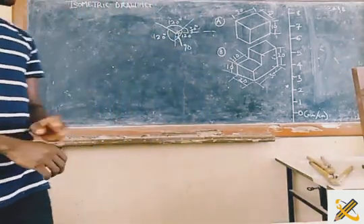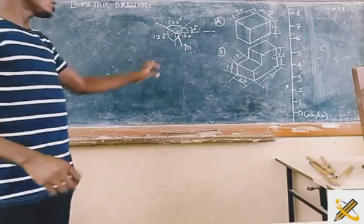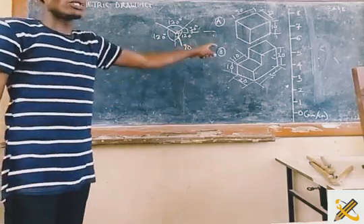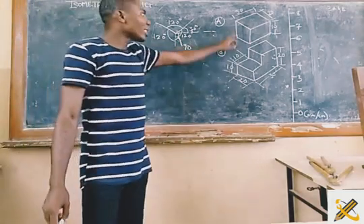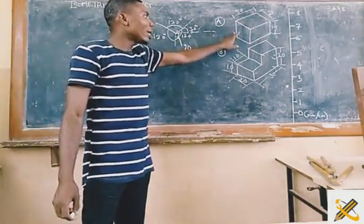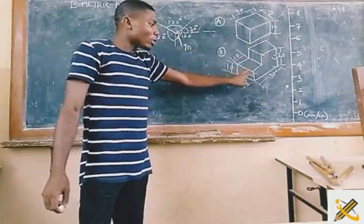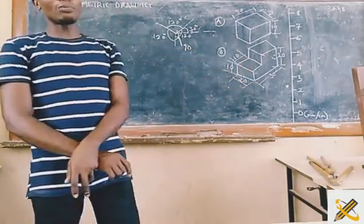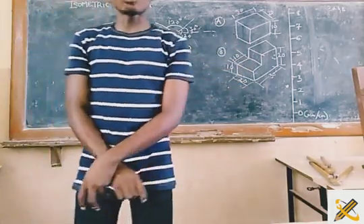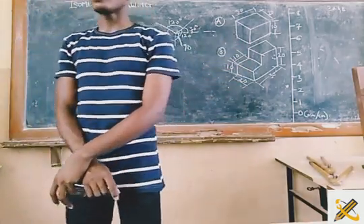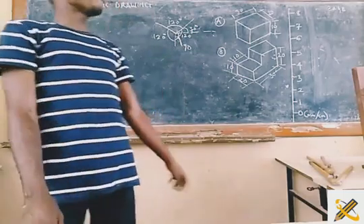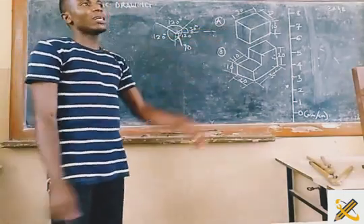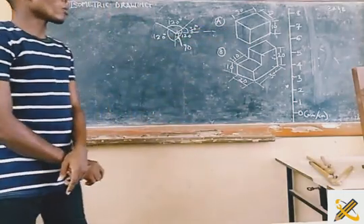So we will be looking briefly into two objects. We will be constructing them together using the principle of isometric drawing. Let's start with the first one. This very first one is a rectangular box.